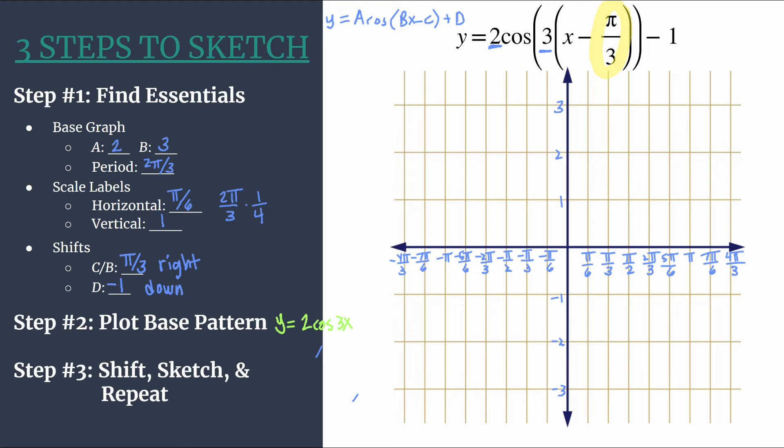So our first point is going to be a maximum for now on the Y axis. It'll have a Y coordinate of A. So that point should be here at zero, two. Moving over our next point, we'll have an X coordinate at the first tick mark. So pi over six. And it's going to be on the X axis because it's a zero or an X intercept.